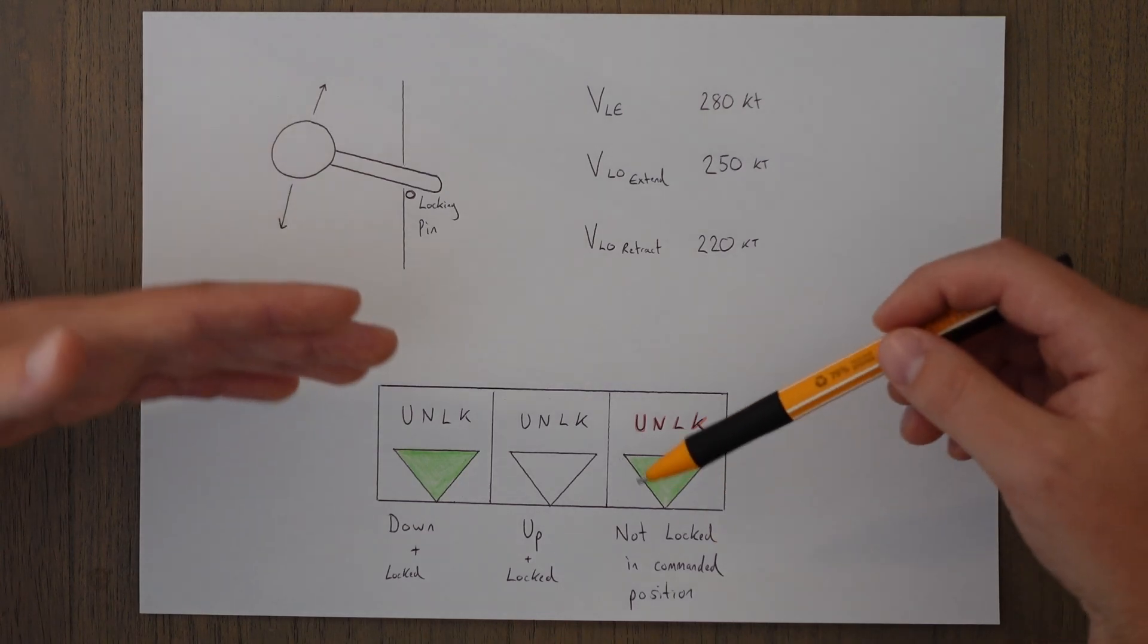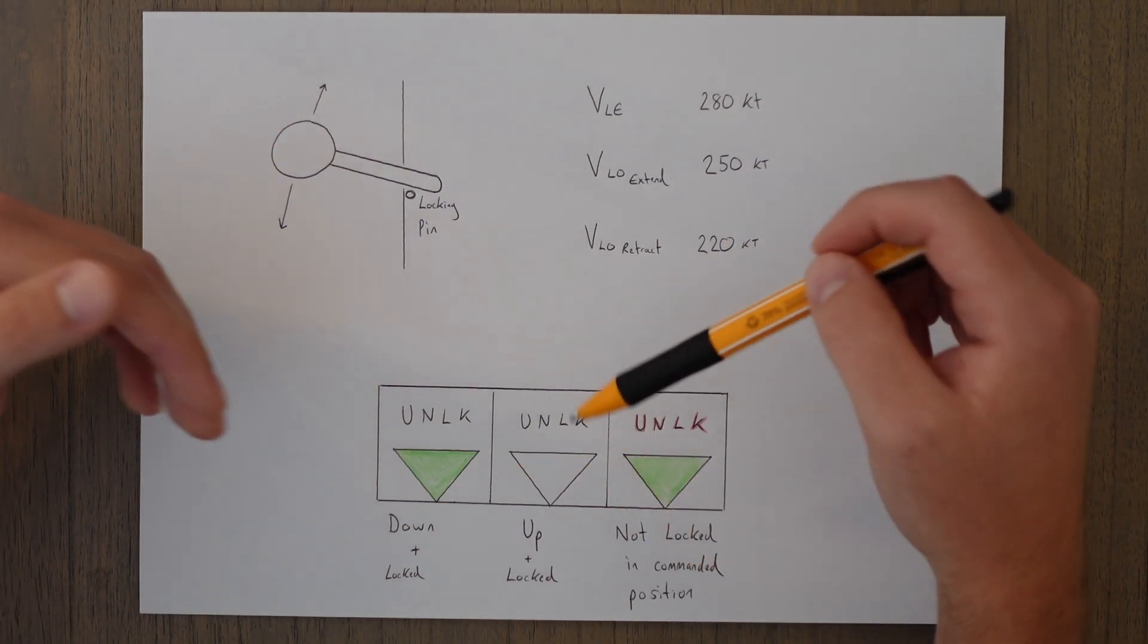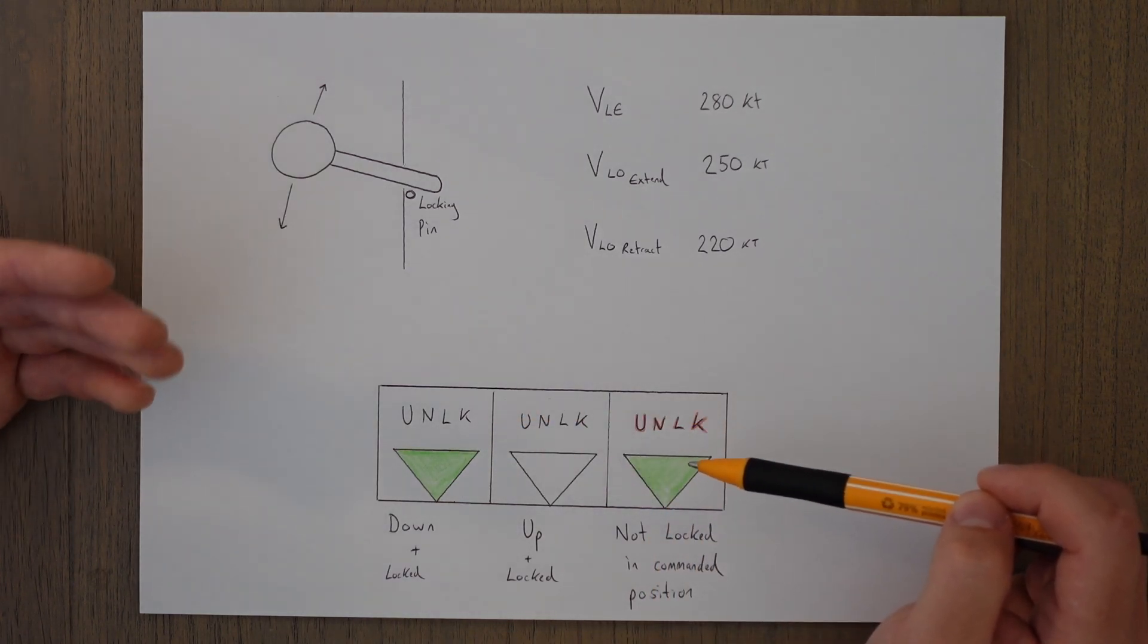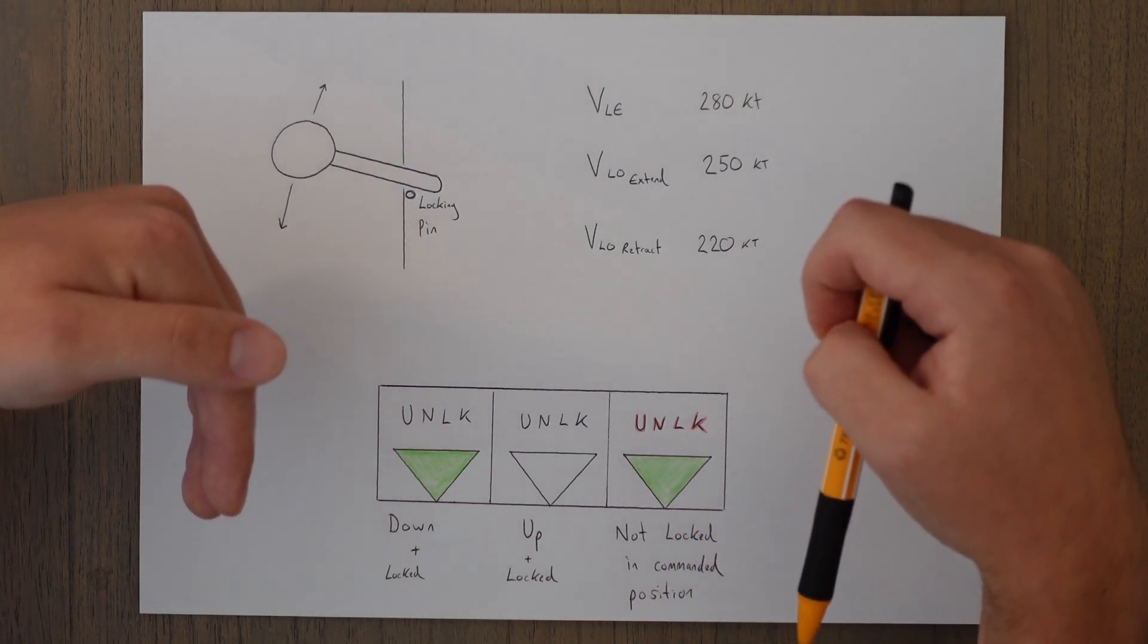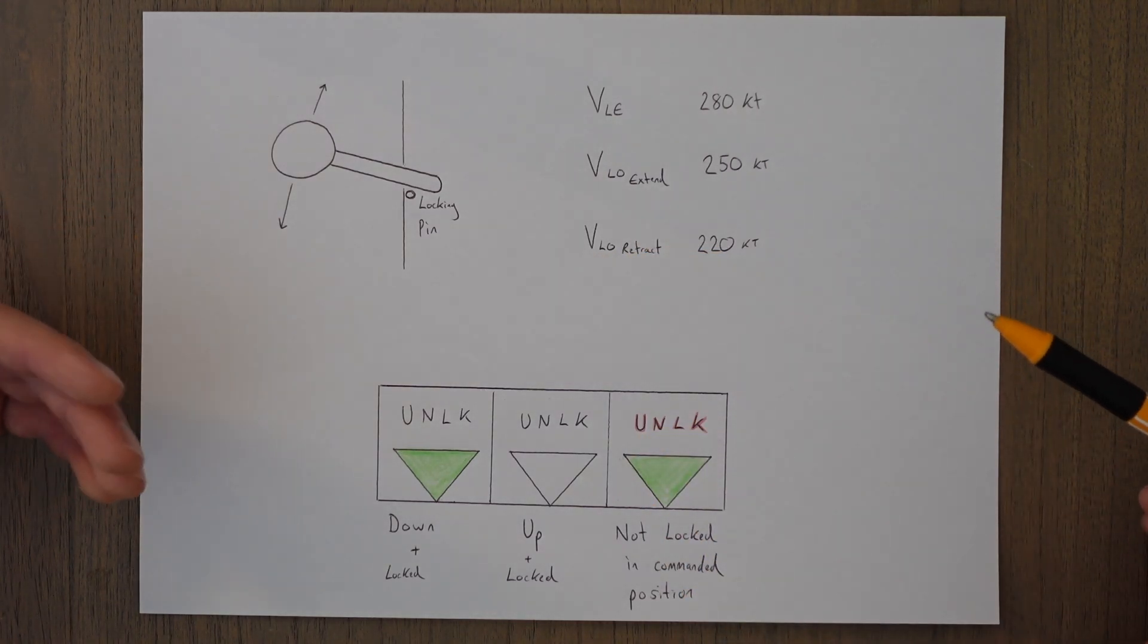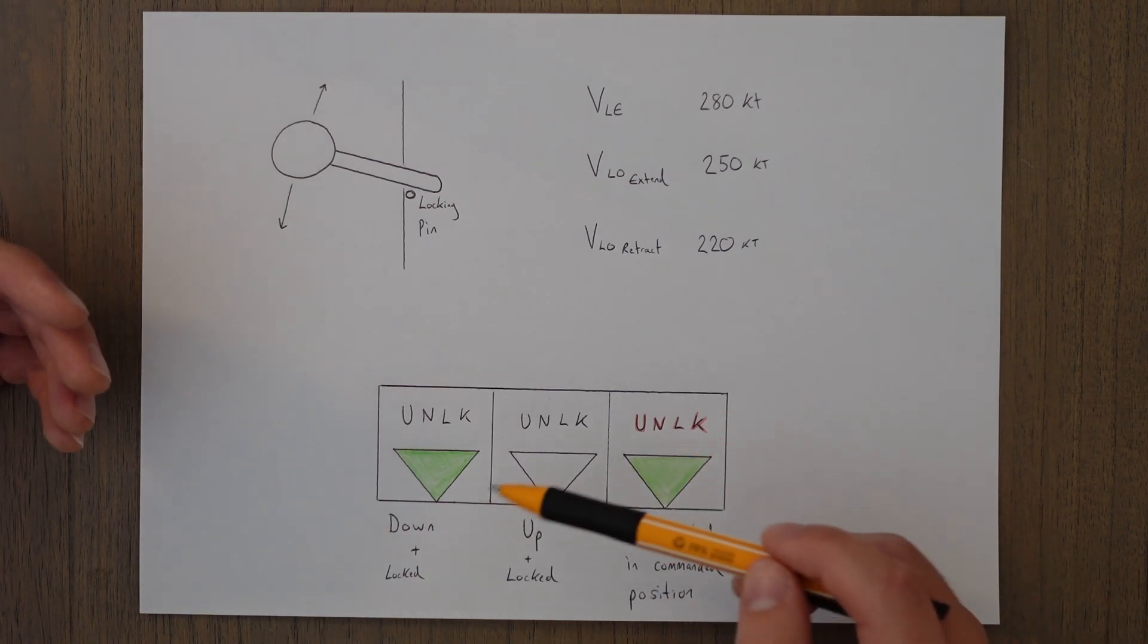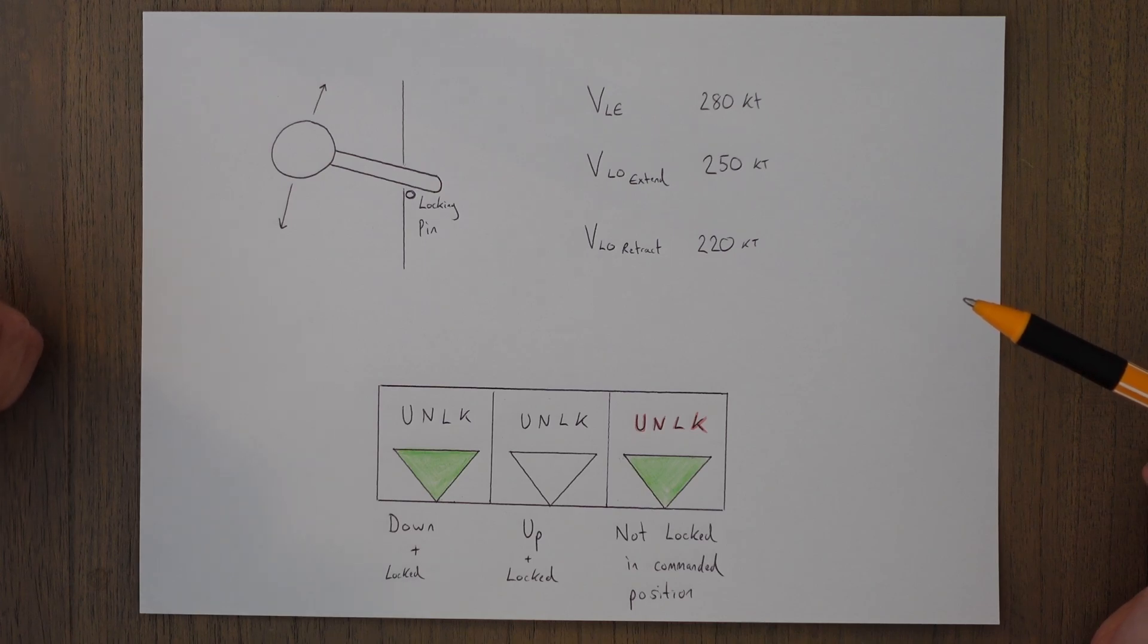We don't want to land in that situation because it might mean that when we come in to land, one of the gears could fold back up into the aircraft because it is not locked. So you want to make sure you've got three greens before landing; otherwise, you might get the situation where one of them collapses in on itself.